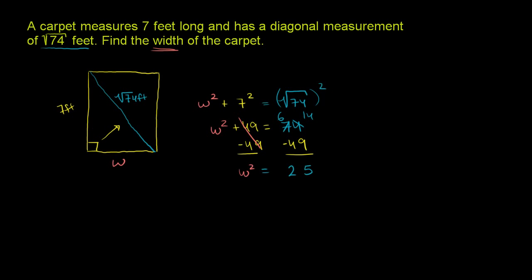So W is going to be equal to the square root of 25, the positive square root. Let's take the square root of both sides, and we get W equals 5, because obviously we don't want negative 5, that wouldn't be a realistic distance. So the width of the carpet is 5 feet. And we're done.